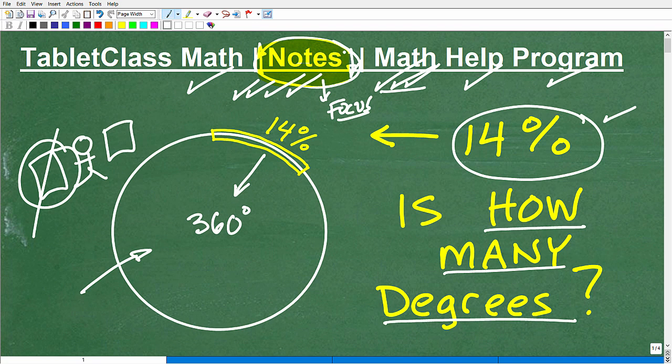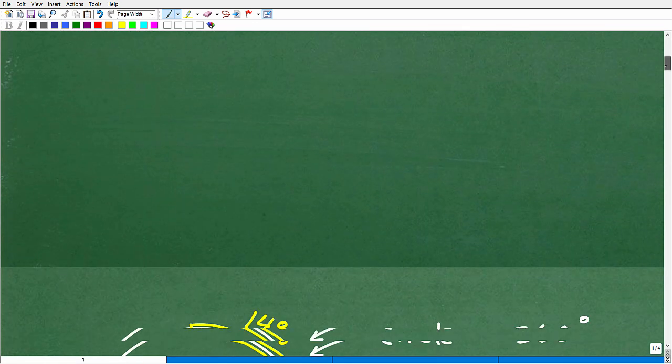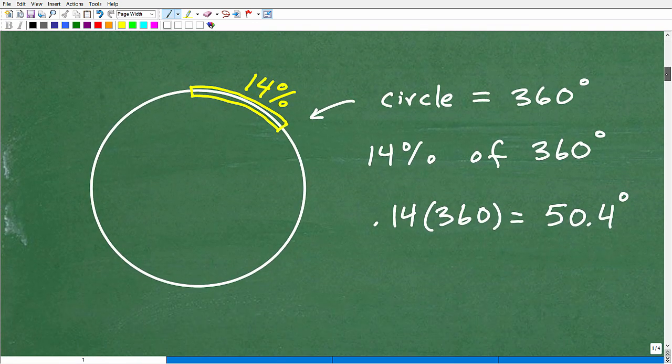Again, if you have a calculator, you can do this in about 11.6 seconds. We need to find 14% of 360 degrees, and that is going to be the solution. So let's go ahead and walk through this. All right, so here is our circle.